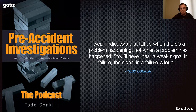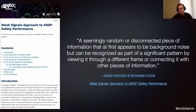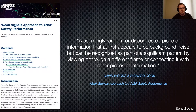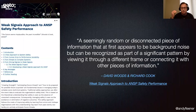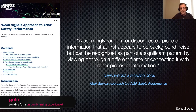A more technical definition comes from an ANSP safety performance white paper that David Woods and Richard Cook wrote: a weak signal is a seemingly random or disconnected piece of information that at first appears to be background noise, but can be recognized as part of a significant pattern by viewing it through a different frame or connecting it with other pieces of information. It's only weak in the sense that you haven't figured out what it means yet — you see it, you have some understanding that it's there, but you haven't connected it to anything yet. It requires more context.